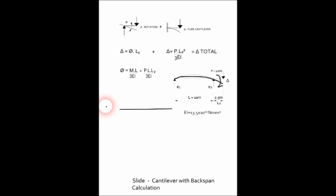So first of all for the rotation, and looking at units of millimeters and newtons, we've got 10,000 newtons, which is p times L, which is 10,000 millimeters times L2, 2500 millimeters, divided by three times EI, 13.5 to the 12.